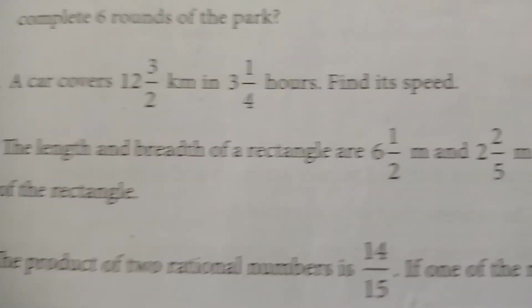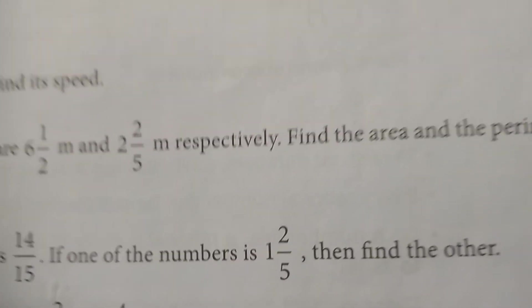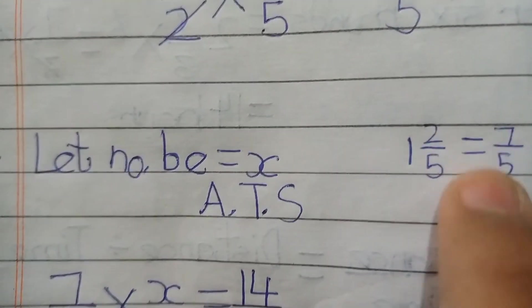So jo do numbers ke product hai wo hai 14 over 15. Agar ek number hai 1 whole 2 over 5, so humein find karna hai doosra. So dekho, let number be X and 1 whole 2 over 5 is equal to 7 over 5. Yeh hum pehle le lete hain.